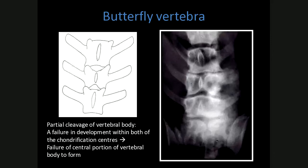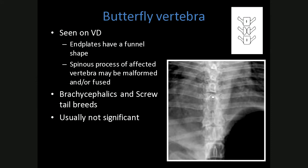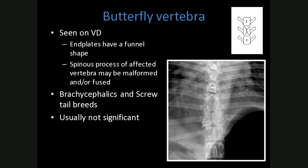Butterfly vertebrae look exactly as the name indicates. They're due to partial cleavage of the vertebral body — a failure in development of both chondrification centers — so the central portion of the vertebral body doesn't form. The butterfly shape is clearly seen in this example. A VD view is needed to see it, as they are difficult to appreciate on lateral views. The end plates have a funnel shape and the spinous processes may also be malformed or fused. Butterfly vertebrae are more common in brachycephalic breeds and are usually not clinically significant.